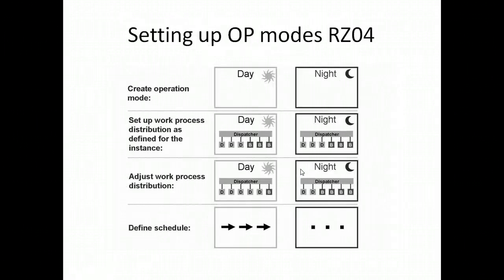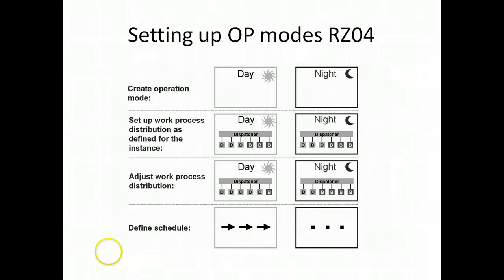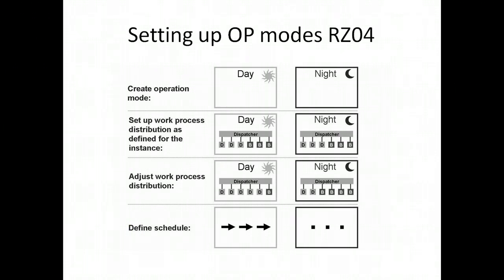To set up operation modes, you use T-code RZ04 to create operation modes in the system. Once created, you distribute the work processes to the day and night operation modes and adjust them to the available instances. Then you define the timetable — that is, scheduling — specifying from which time to which time each operation mode is active.